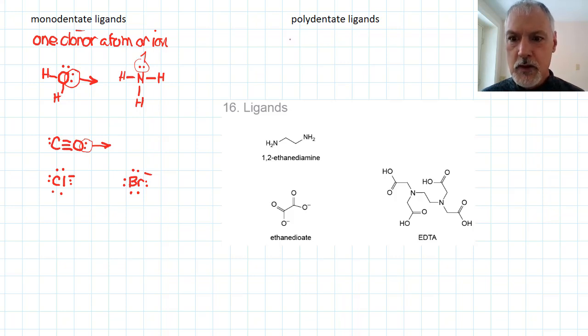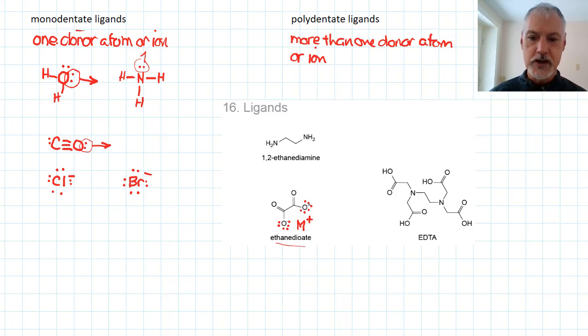Polydentate ligands have more than one donor atom or ion. Down here at this particular species, the ethane dioate ion, if we look more closely at these oxygens, there would be present six unbonded electrons. These are capable, if I have a metal species with some sort of positive charge, this one single molecule is capable of donating two pairs of electrons. Likewise, this molecule, ethane diamine, can do the same.